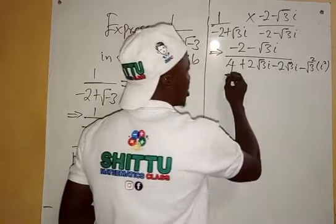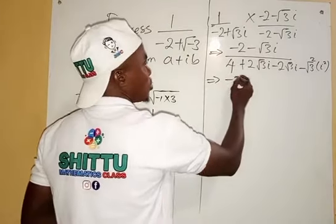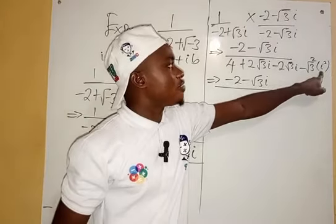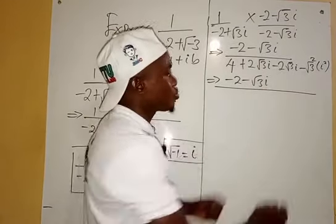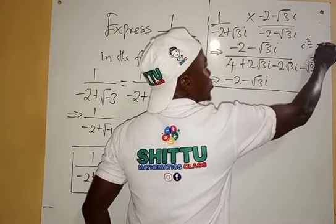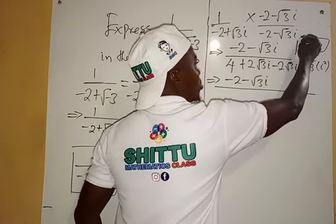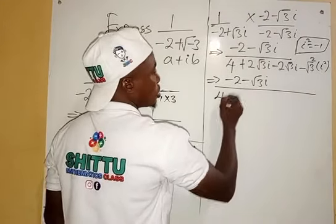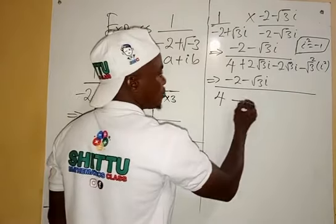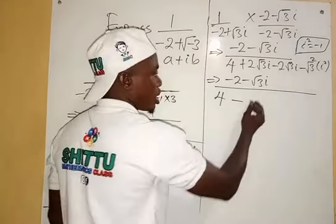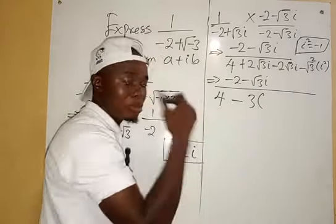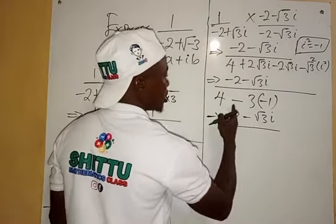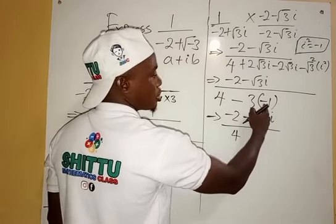So we have minus 2 minus root 3 i in the numerator. In the denominator, recall that i squared equals minus 1 — that's also from the complex plane. So the middle terms cancel to 0, and root 3 squared times i squared becomes 3 times minus 1, which is minus 3. So the denominator is 4 minus minus 3, which gives us 4 plus 3 equals 7.